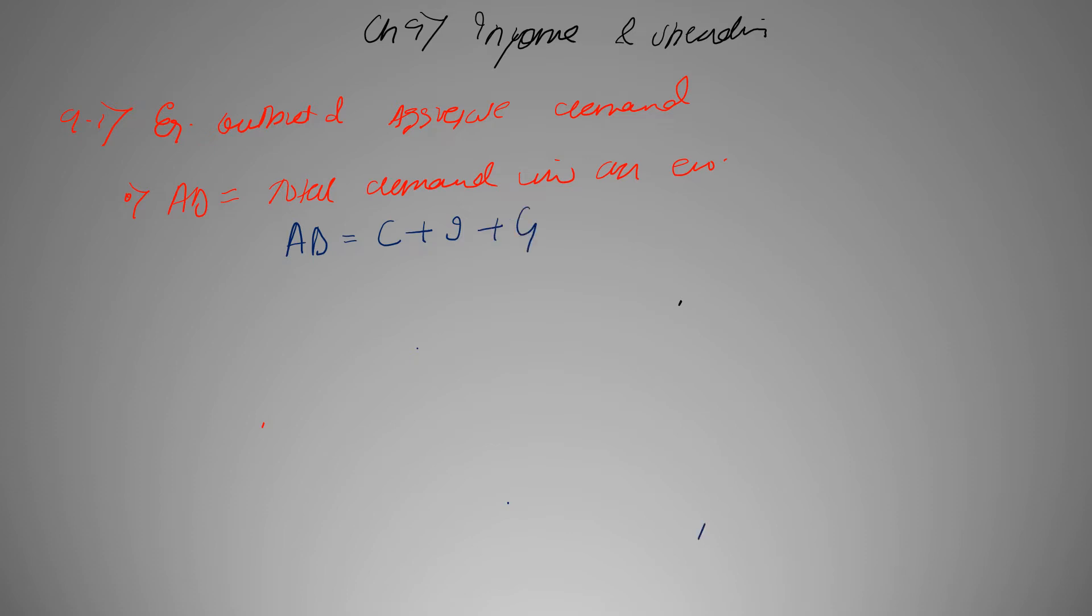Then we have G which represents government spending and depicts the demand by government, and then we have NX which is net exports. It basically shows our demand from abroad.